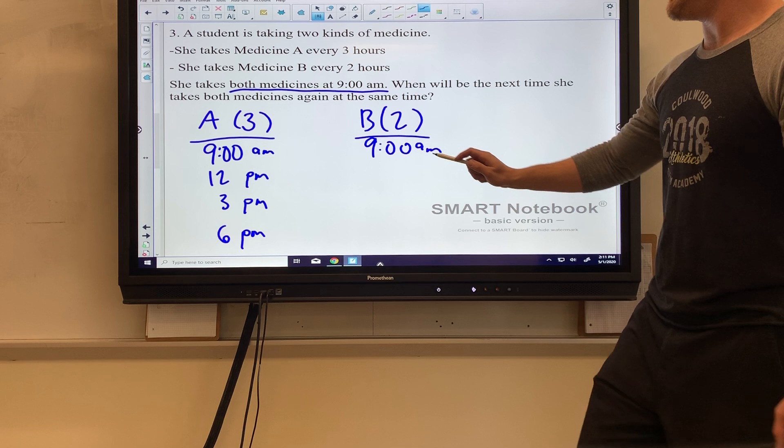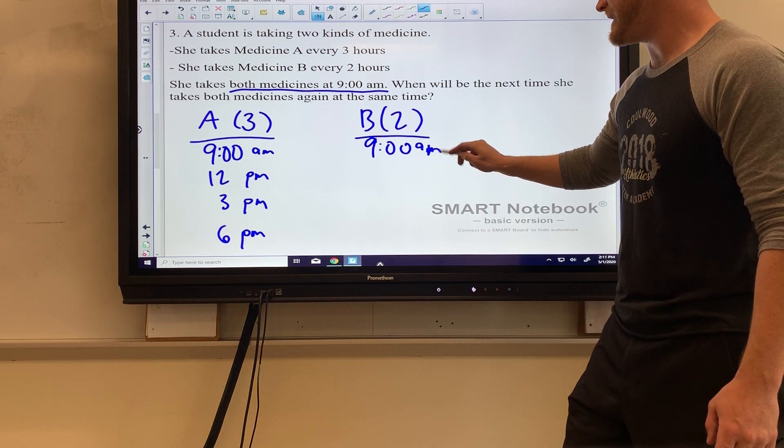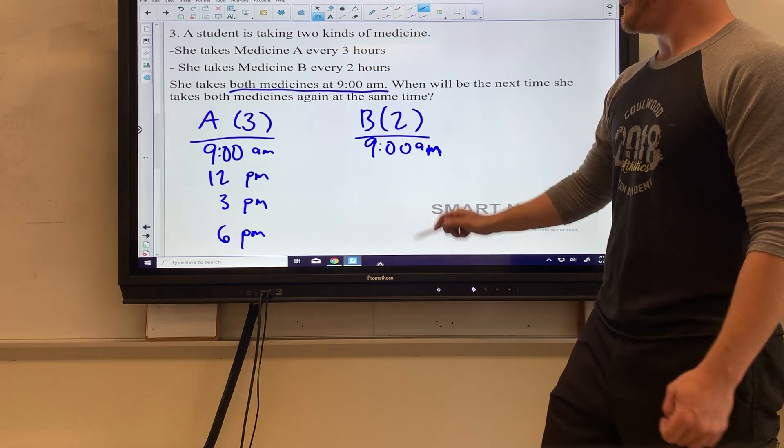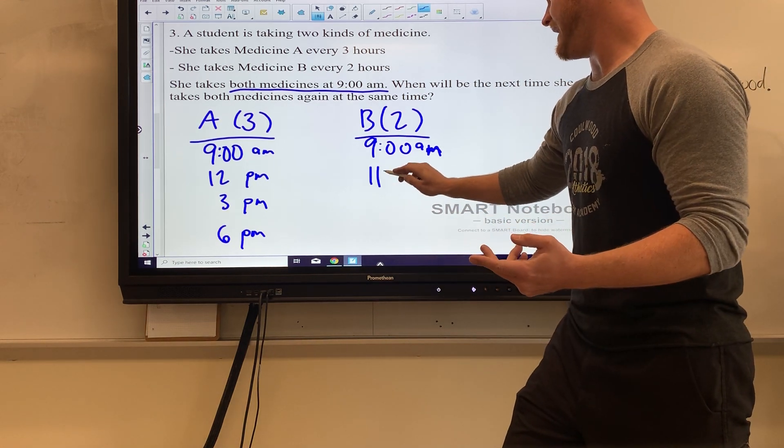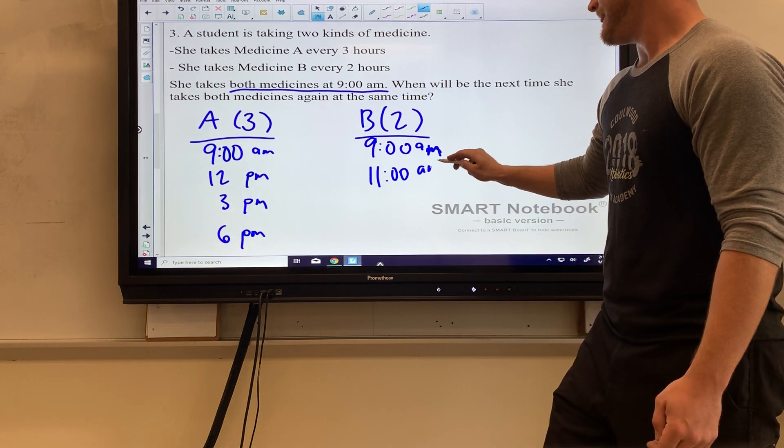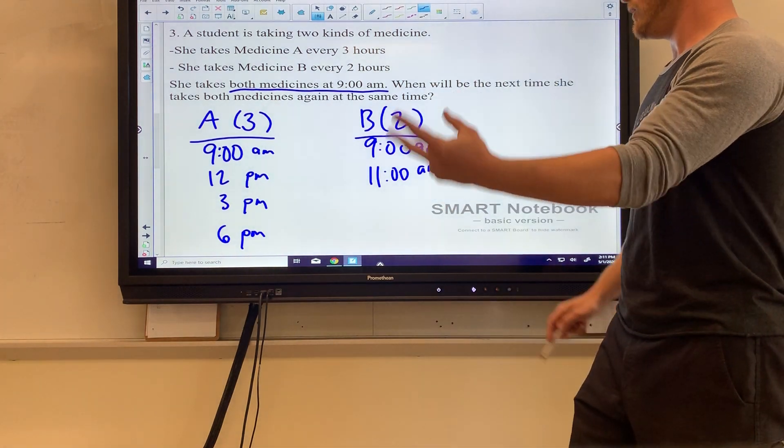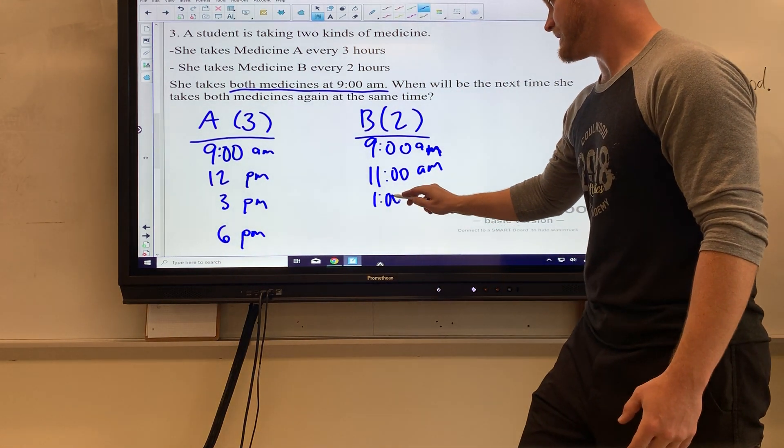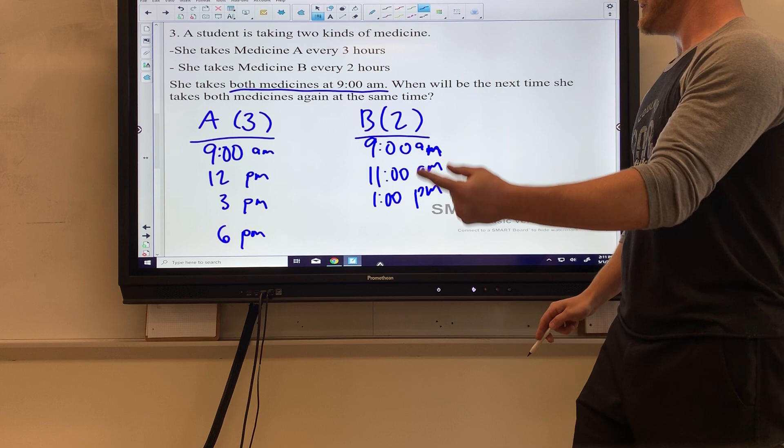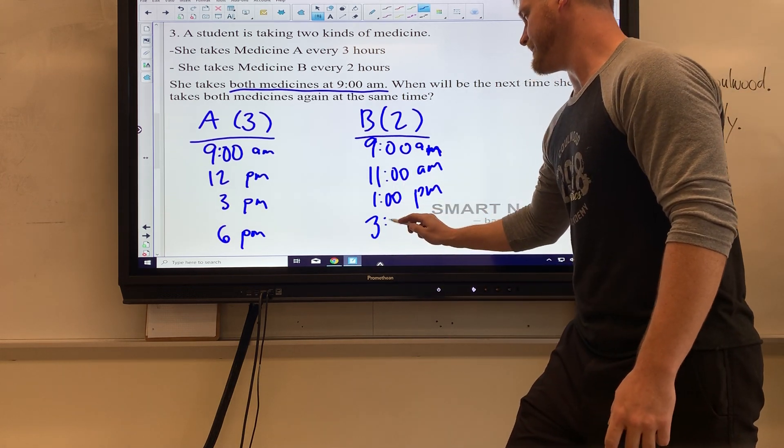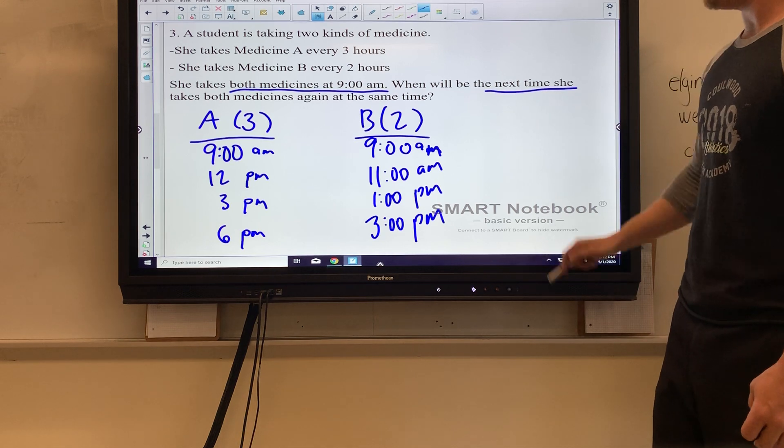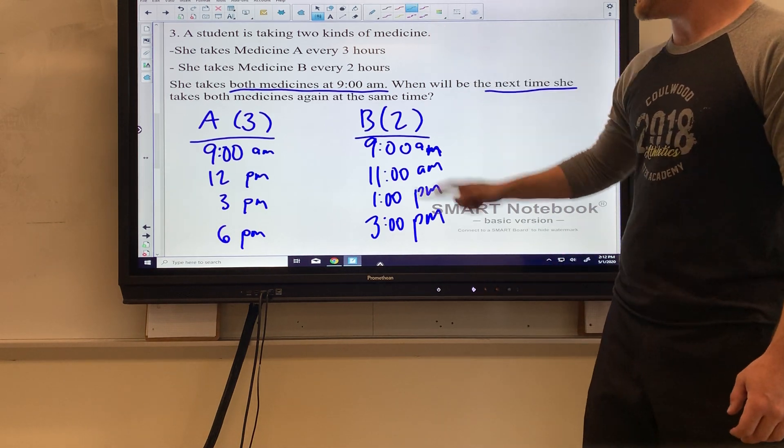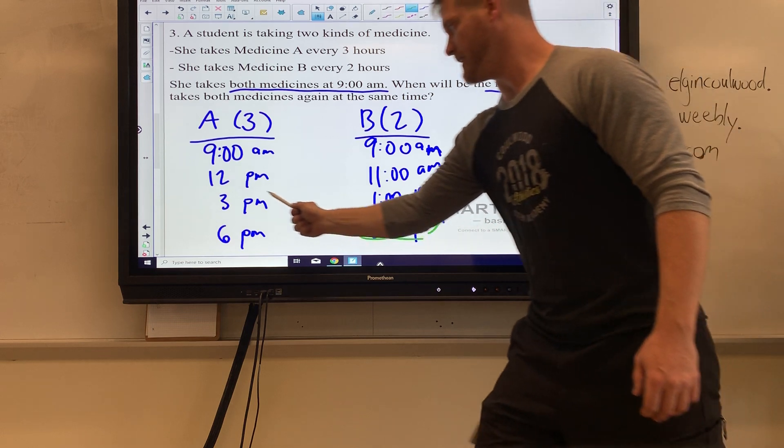Medicine B starting at 9 a.m., but this time we're counting by every two hours. So every two would be 9 a.m., 10, 11 a.m., and then 12, 1 p.m., and then 2, 3 p.m. So the next time she takes both medicines, the first number that they share again is going to be this 3 p.m.